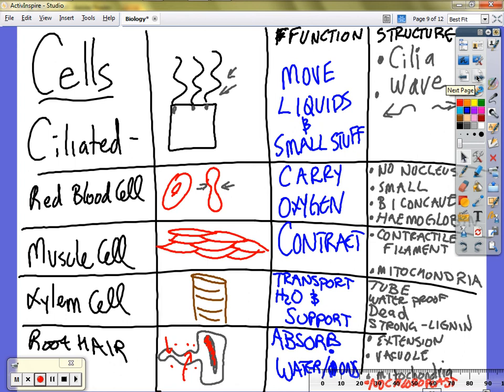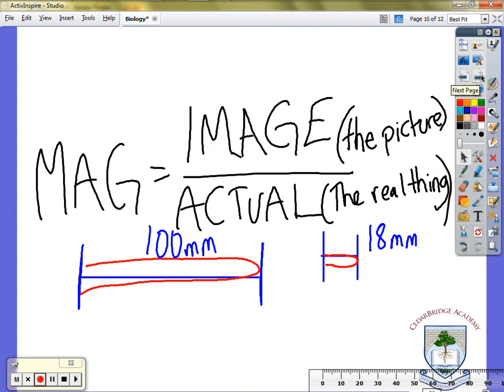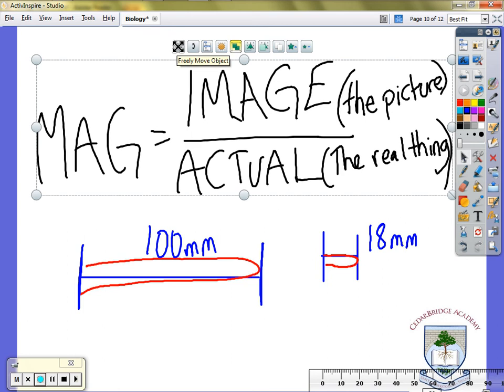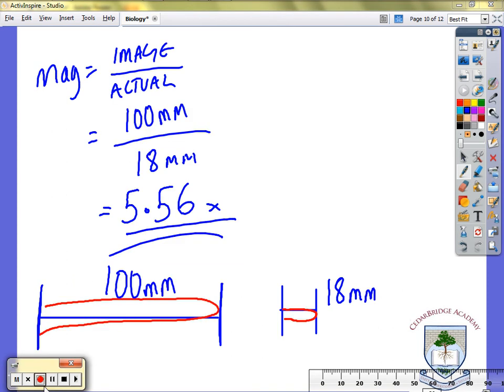Whoa, where'd that come from? That was the other day. Oh, you can delete yes, that's exactly what I wanted to do. So our formula is magnification equals image over actual so mag equals image over actual equals 100 millimeters over 18 millimeters equals 5.56 times.